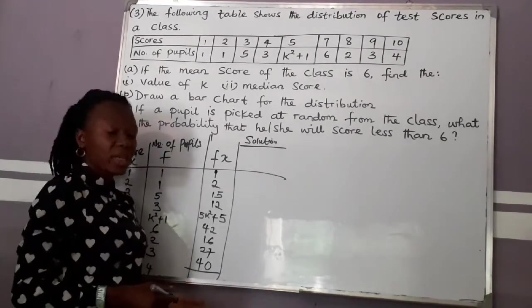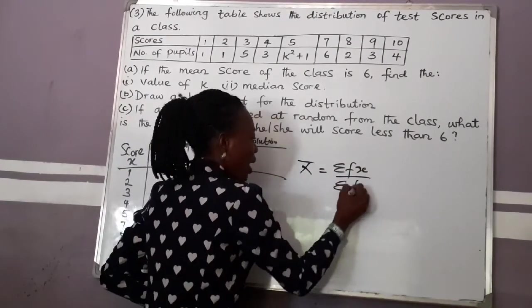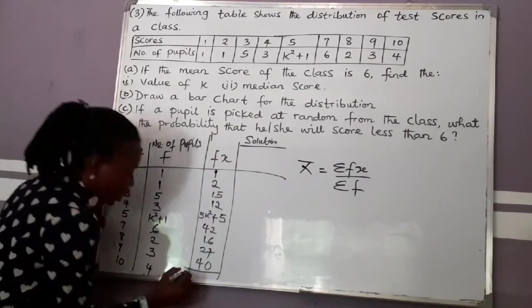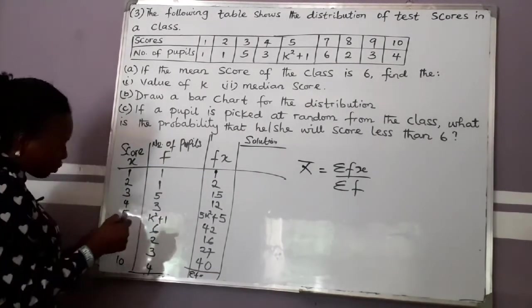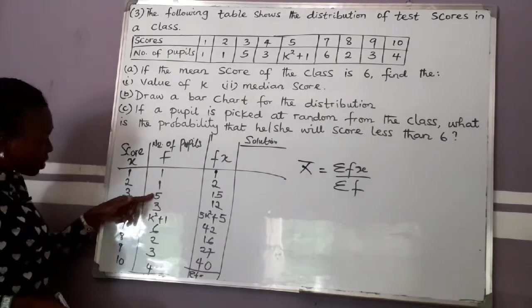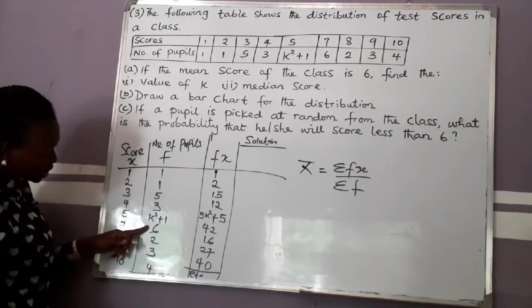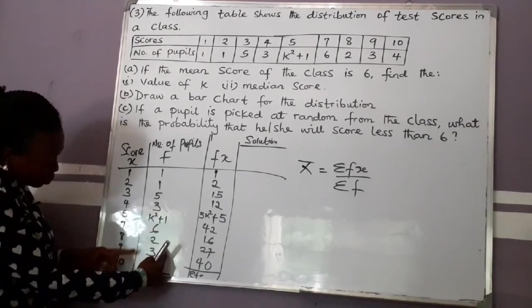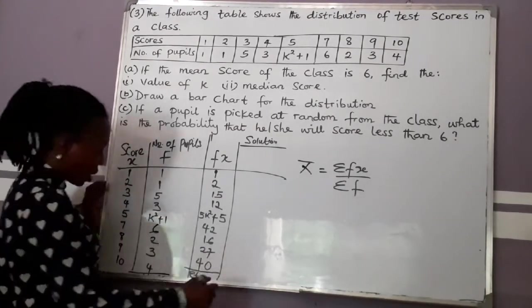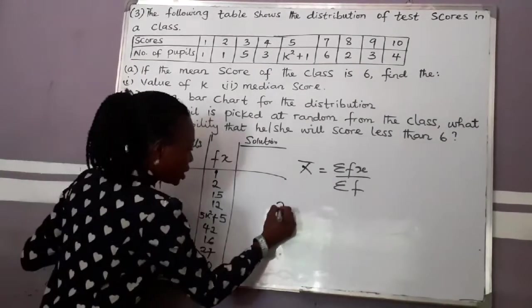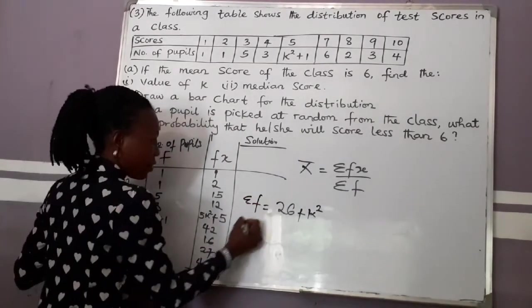The formula for mean is: summation of Fx over summation of F. Summing the frequencies: 1+1+5+3+(k²+1)+6+2+3+4 = 26 plus k². Summing the Fx column: 1+2+15+12+5+42+16+27+40 = 160 plus 5k². So summation F = 26 + k², and summation Fx = 160 + 5k².